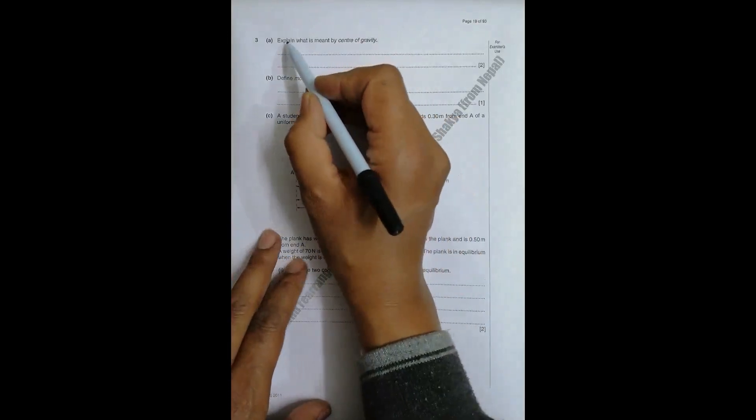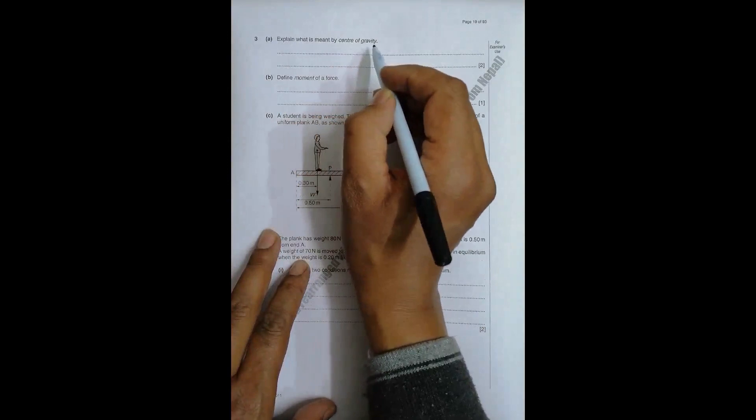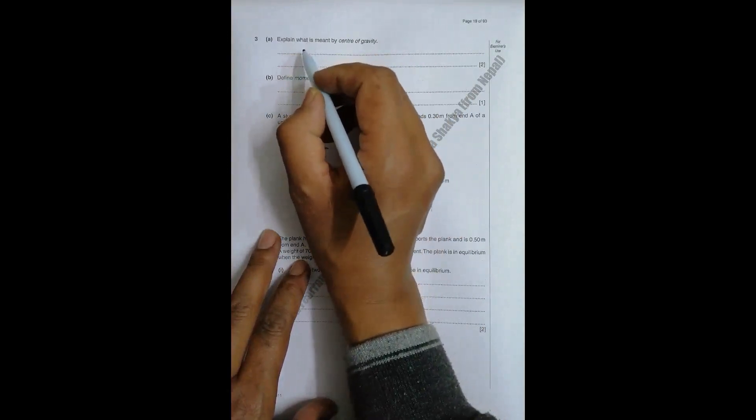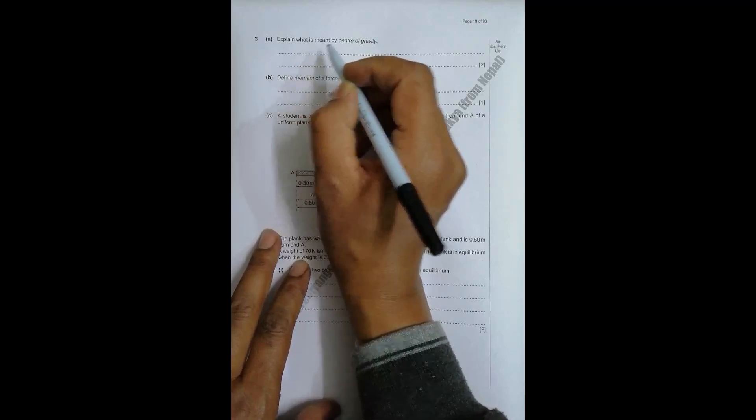The first question 3 asks us to explain what is meant by center of gravity. So it is the point of a body through which the gravitational force or the weight is supposed to act.